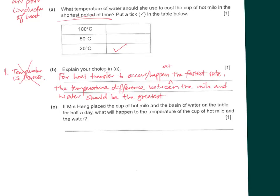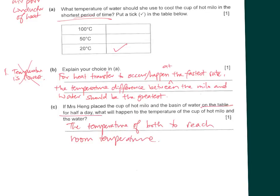Part C: if Mrs. Heng placed the cup of hot Milo and basin on the table for half a day, both will reach room temperature. The Milo will cool down and the basin of water (if at 20°C) will increase in temperature. Room temperature is usually about 25 to 30 degrees, though the question doesn't specify.